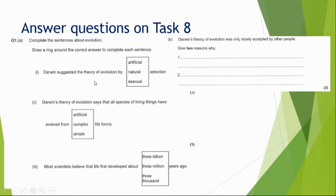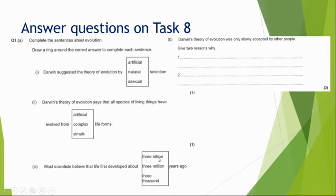You haven't done Darwin yet, so some of these questions are perhaps slightly harsh. Darwin suggested the theory of evolution by natural selection. He said all living things have evolved from simple life forms — we all started incredibly simple, like single-celled organisms, and became more complex over billions of years. Most scientists believe life first developed about three billion years ago.